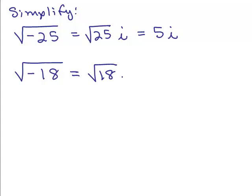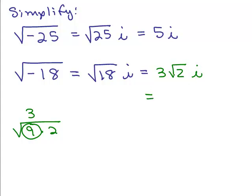For the second one: square root of negative 18 — square root of 18 simplifies as 9 times 2, so I can take the square root of 9 out as a 3, giving 3 square roots of 2 times i. A lot of times the i is written in front of the square root so it doesn't accidentally get extended — so 3i square root of 2 means the same as 3 square root of 2 times i. So, square root of negative 25 is 5i and square root of negative 18 is 3 square root of 2 times i. These are both pure imaginary numbers.